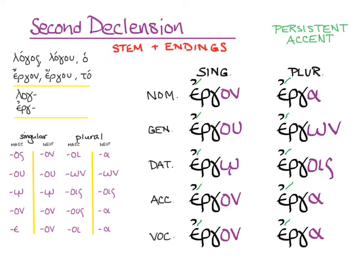Notice how the nominative, accusative, and vocative look the same as each other in both the plural and the singular for neuter nouns.